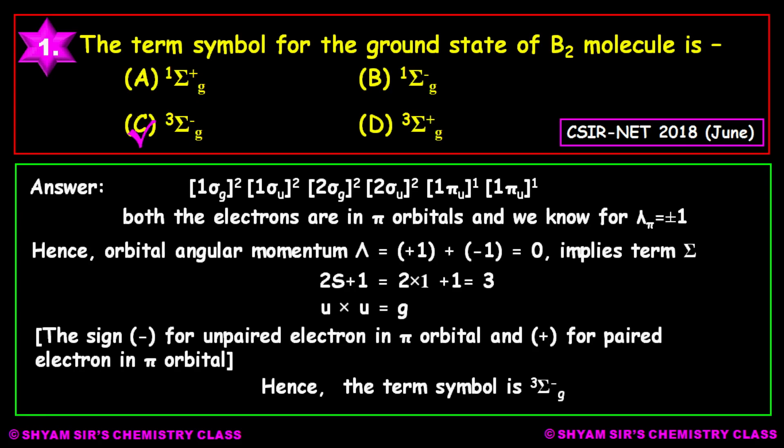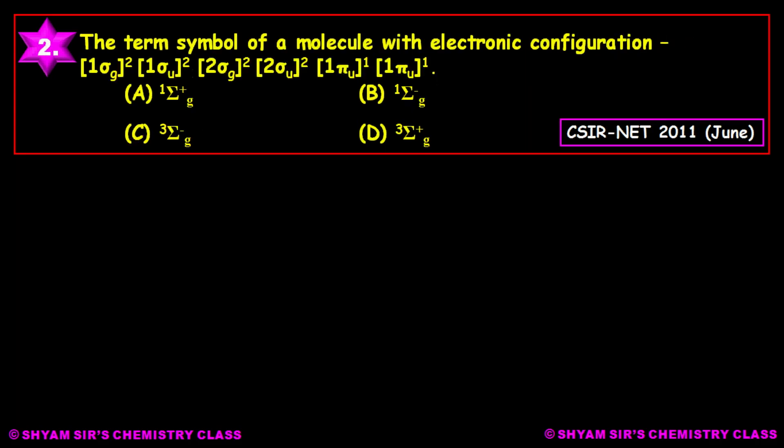Now here is another example — this is a CSIR NET 2011 question where the electronic configuration is directly given. It is similar to the previous question: they mentioned B2 molecule and gave the same options. Here also, we can say the molecular term symbol will be ³Σ⁻g. In this way you can very easily determine the molecular term symbol for diatomic molecules. Thank you.